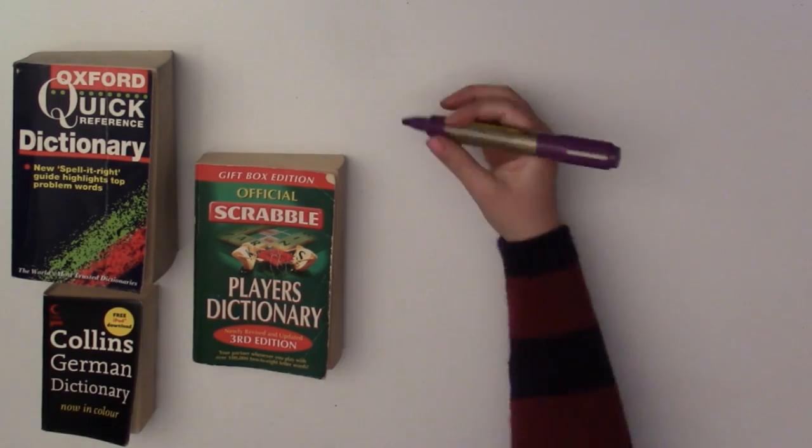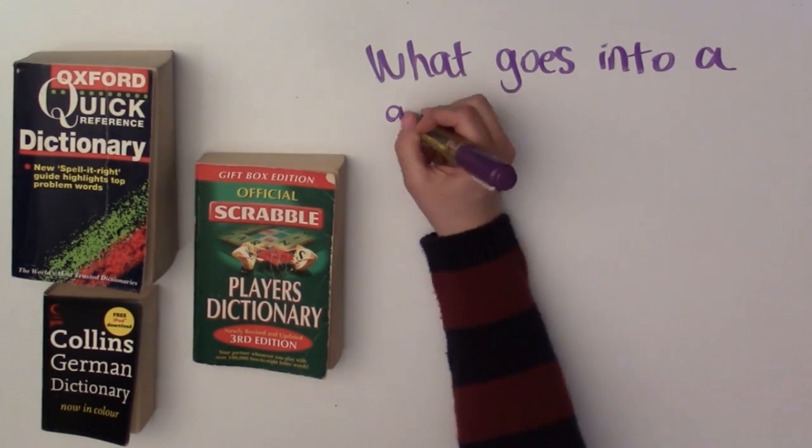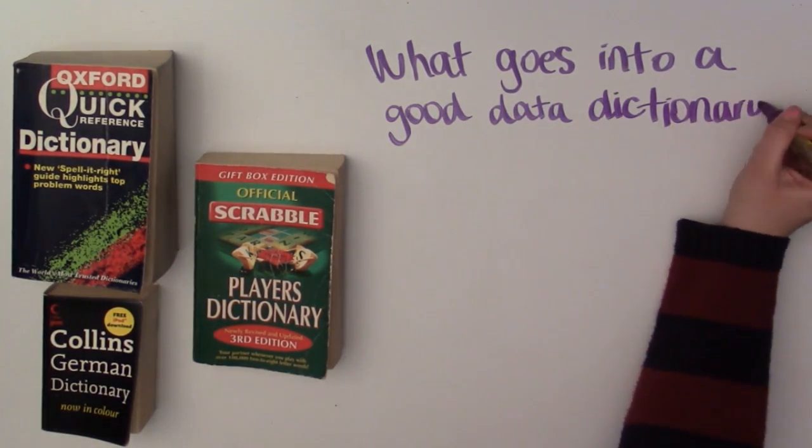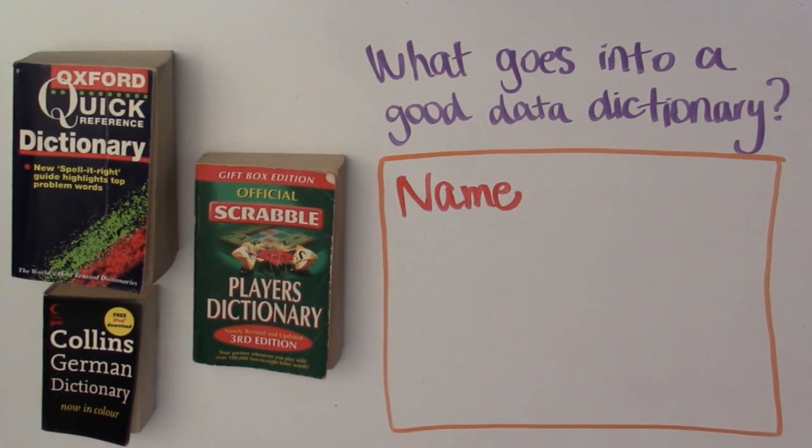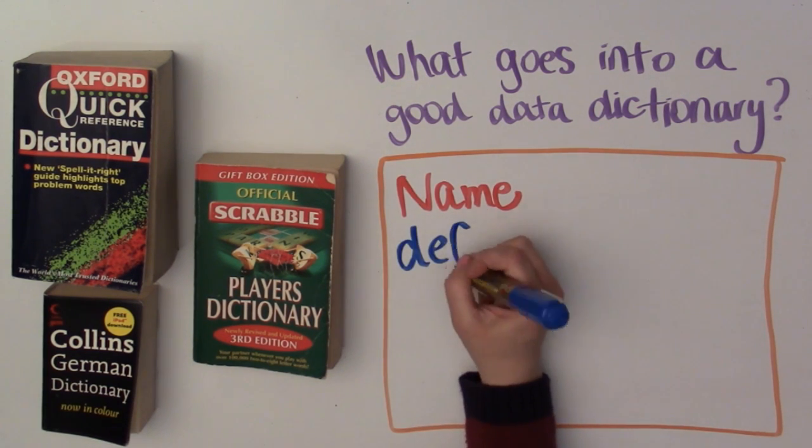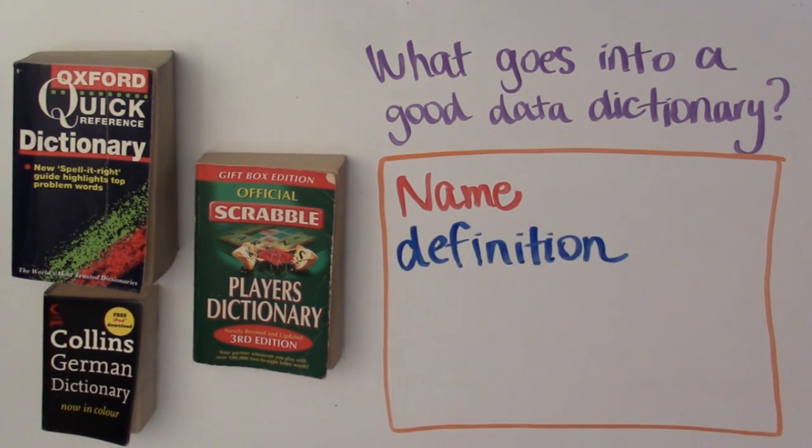If a good dictionary has the word and the meaning of that word, what is a good way of recording in the context of data? To start off with, you would need the name of the column so we can look it up. We would then need the definition so we would know what that column means.